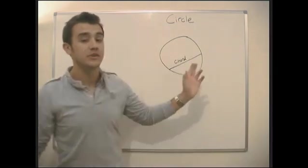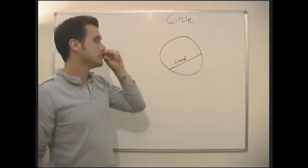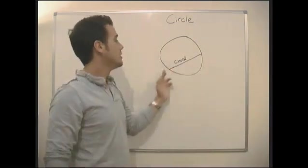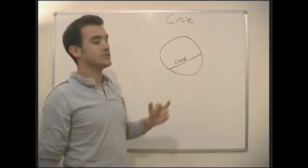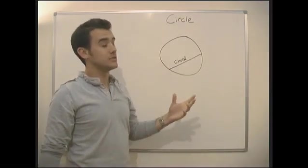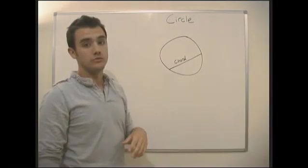The diameter is a special chord that goes through the centre of the circle, cuts exactly in half. But any line from one side to the other, other than the diameter, is just a plain or normal chord.